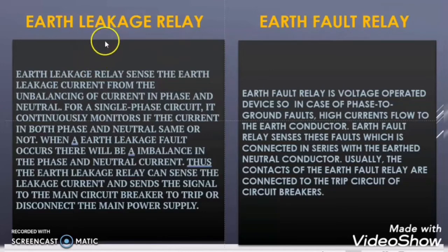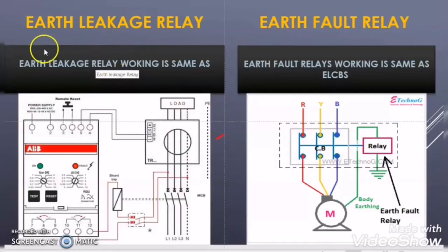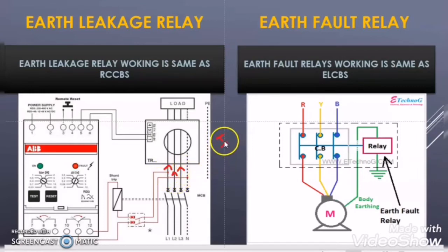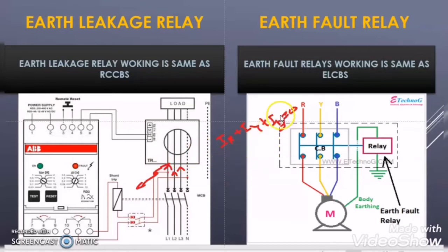Let us understand the working principle of both. For the earth leakage relay: at normal healthy condition, some current flows through R, Y, and B phases. The phasor sum IR + IY + IB is always zero in healthy condition. But if a fault happens in one phase, the phasor sum will not be zero, which activates the CBCT — the core balance current transformer — and the CBCT gives feedback to the earth leakage relay to trip the circuit.